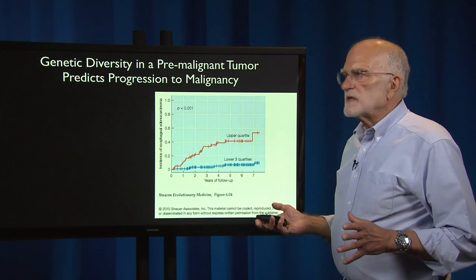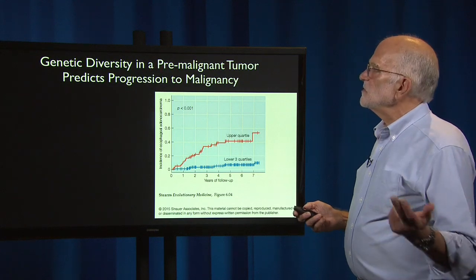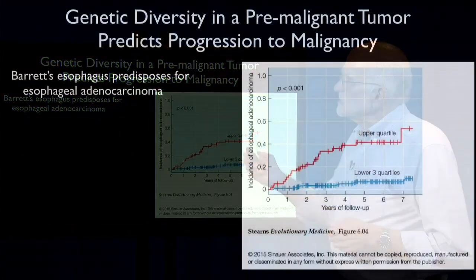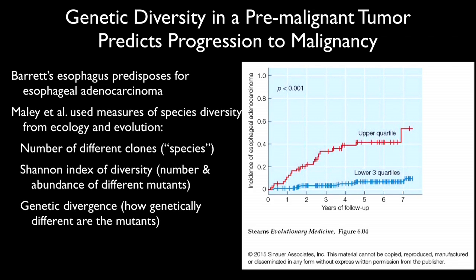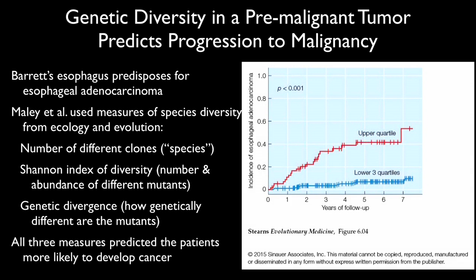An important finding is that the genetic diversity in a pre-malignant tumor predicts progression to malignancy. Barrett's esophagus is a condition of inflammation in the esophagus that predisposes for a cancer called esophageal adenocarcinoma. Carl O'Malley and his collaborators used measures of species diversity from ecology and evolution to measure how genetically diverse the clones in Barrett's esophagus were — including the number of different clones, the Shannon Index of Diversity, and Genetic Divergence. All three measures predicted which patients were more likely to develop cancer.